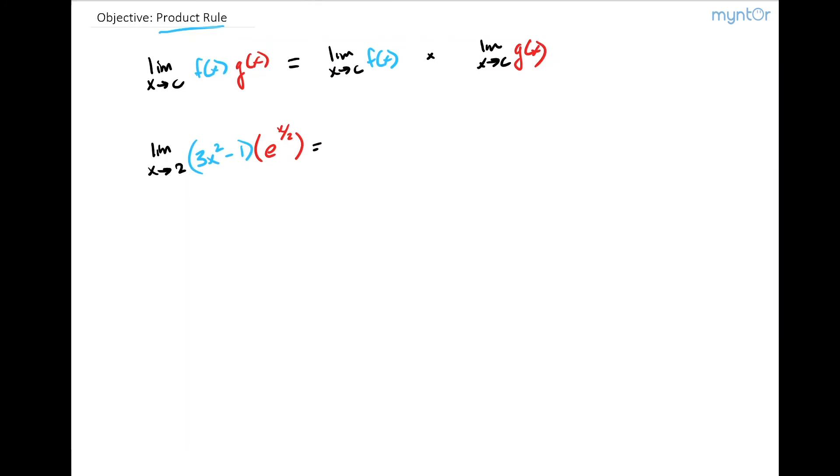Well this rule just says that this is going to be equal to the limit as x approaches two of our first function three x squared minus one and we're going to multiply this quantity by the limit as x approaches two of our second function e to the x over two.